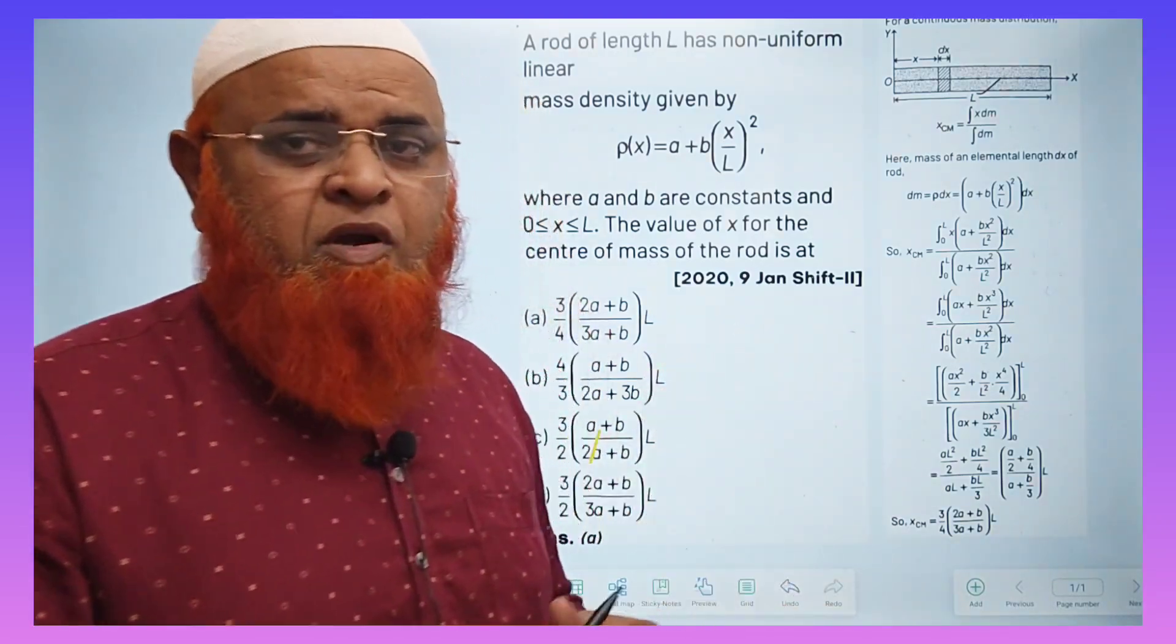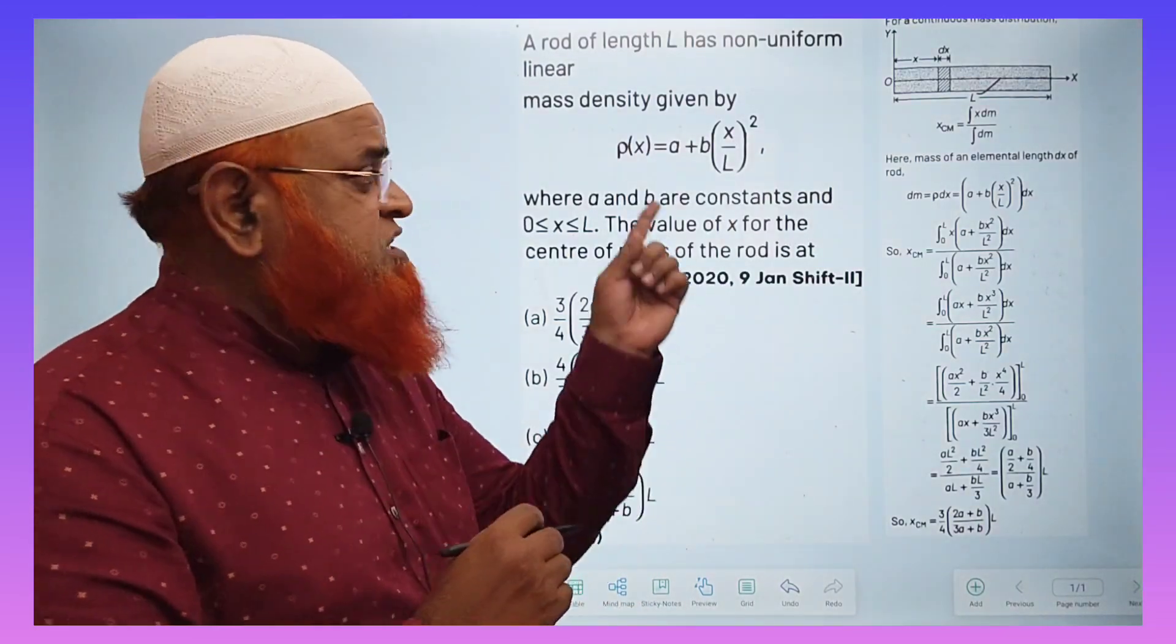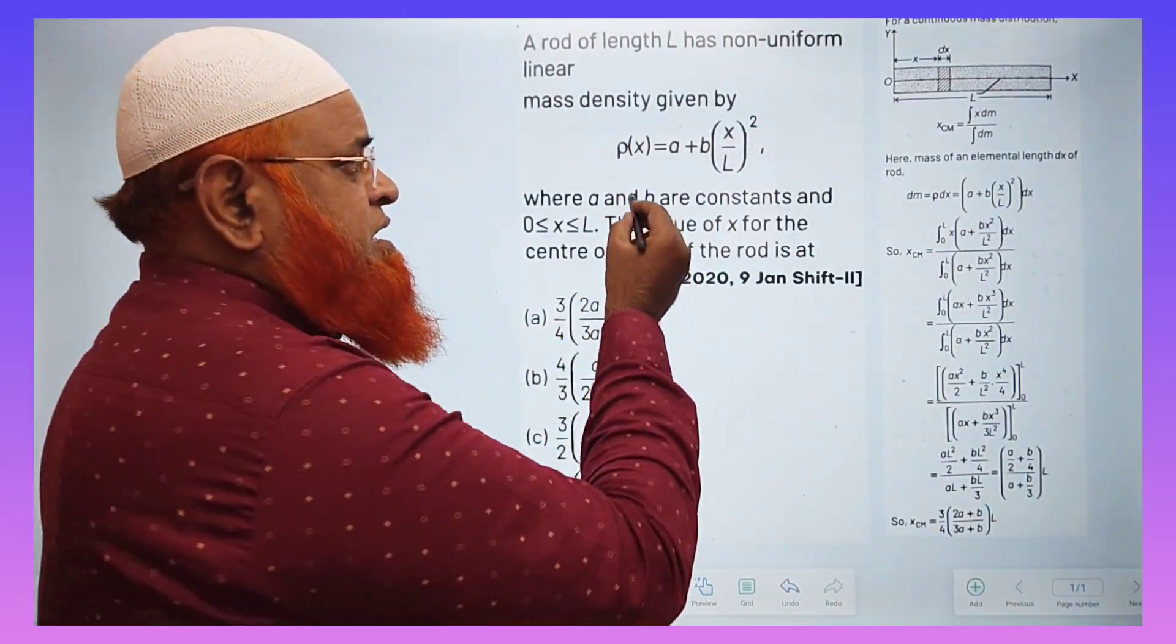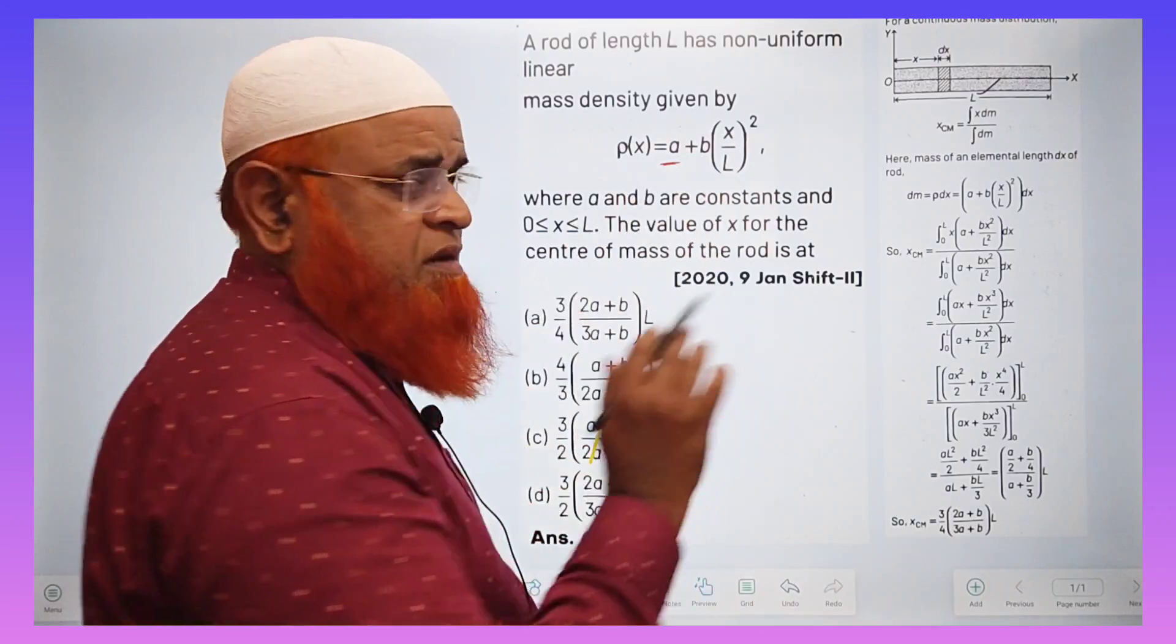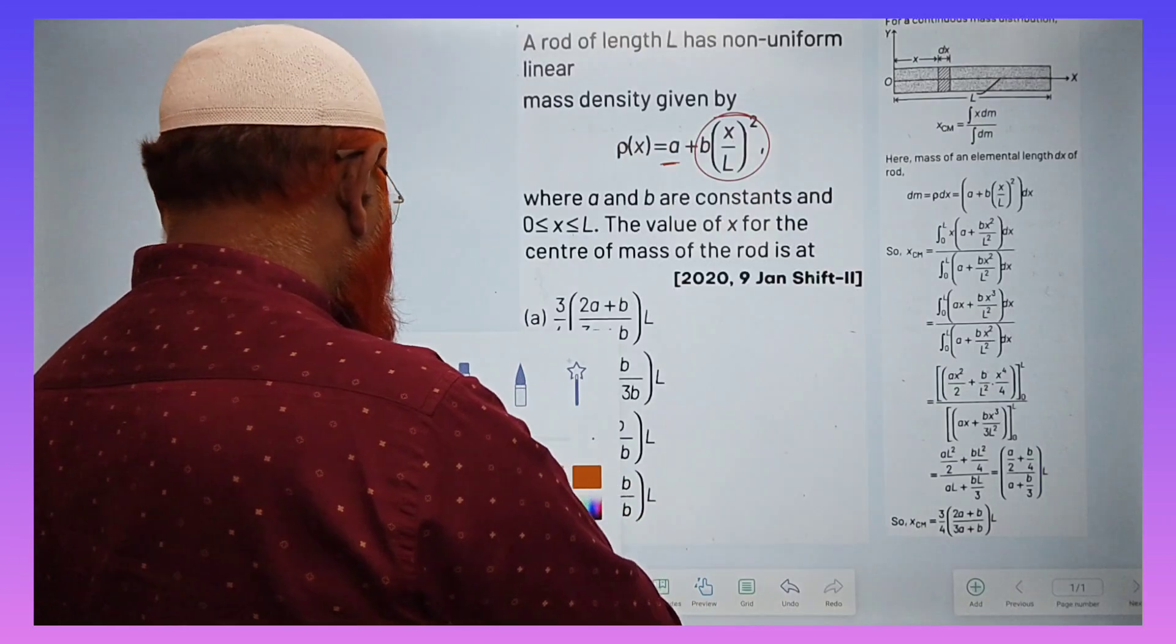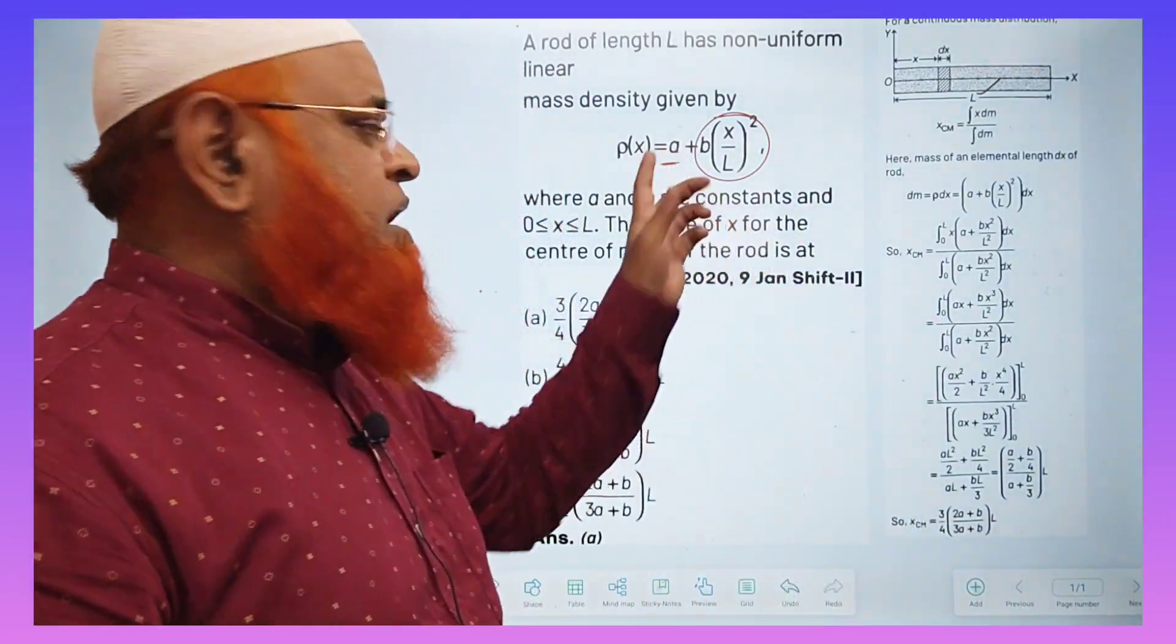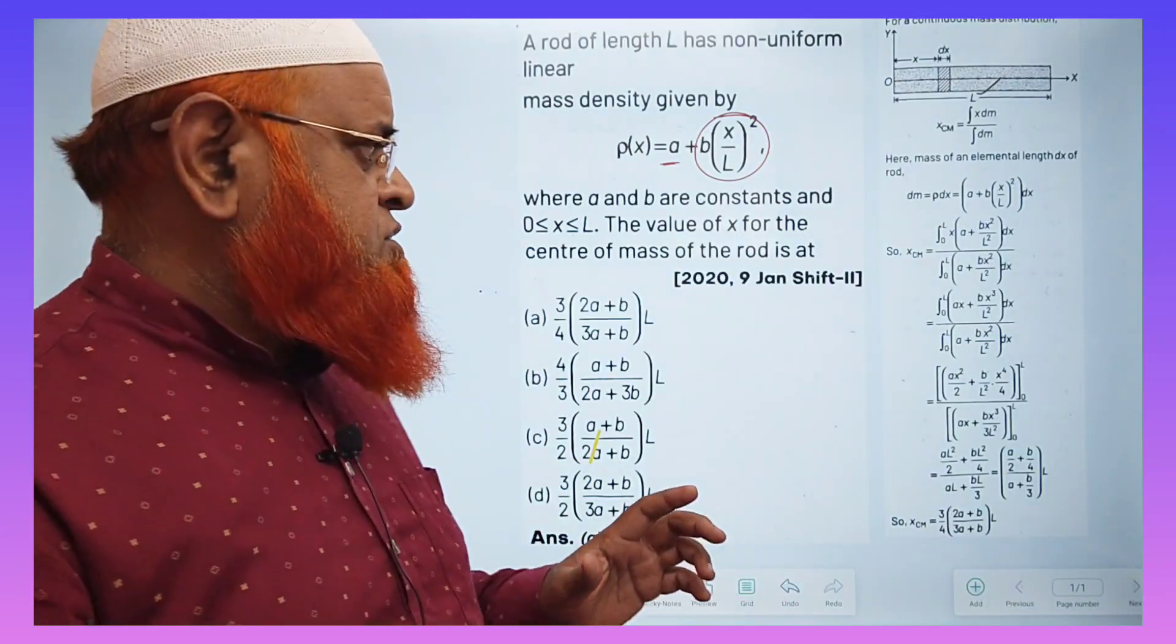But as it is a variable mass with variable density, if you see the formula, A is not variable. Only the B part is going to be variable. The A part is a constant.